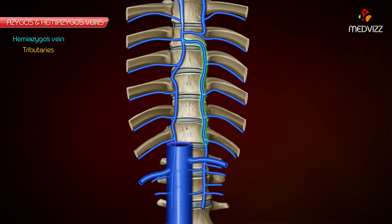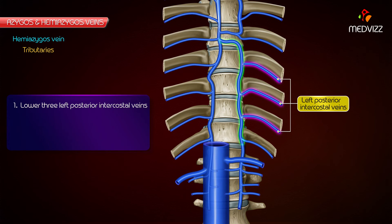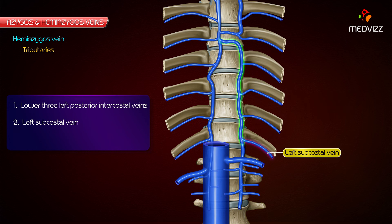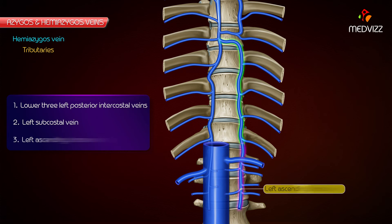Tributaries. The tributaries of the hemiazygous vein are as follows: lower 3, that is 9th to 11th left posterior intercostal veins; left subcostal vein; and left ascending lumbar vein.